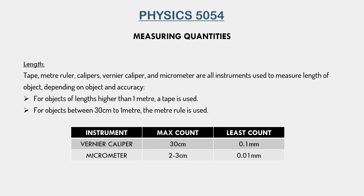Next we have length. There are several instruments used to measure length: the tape measure, the meter rule, the vernier caliper, and the micrometer. They are all used depending on how much the length actually is. If the object is greater than one meter, a tape measure is used because it is the longest instrument available. For objects between 30 centimeters and one meter, we use the meter rule — it is called the meter rule because it measures up to one meter.